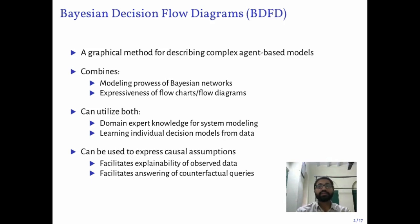The action space of what an agent does in an agent-based model can be really large. For example, if one is modeling a social media platform like Twitter, a natural way would be to consider people as agents who take actions, with tweets as actions. Modeling what a Twitter user decides to do and constructs a tweet involves a lot of decisions, and BDFD provides a systematic way for decomposing this into smaller decisions. BDFD provides a framework for combining the modeling powers of Bayesian networks and the expressiveness and simplicity of flow diagrams.